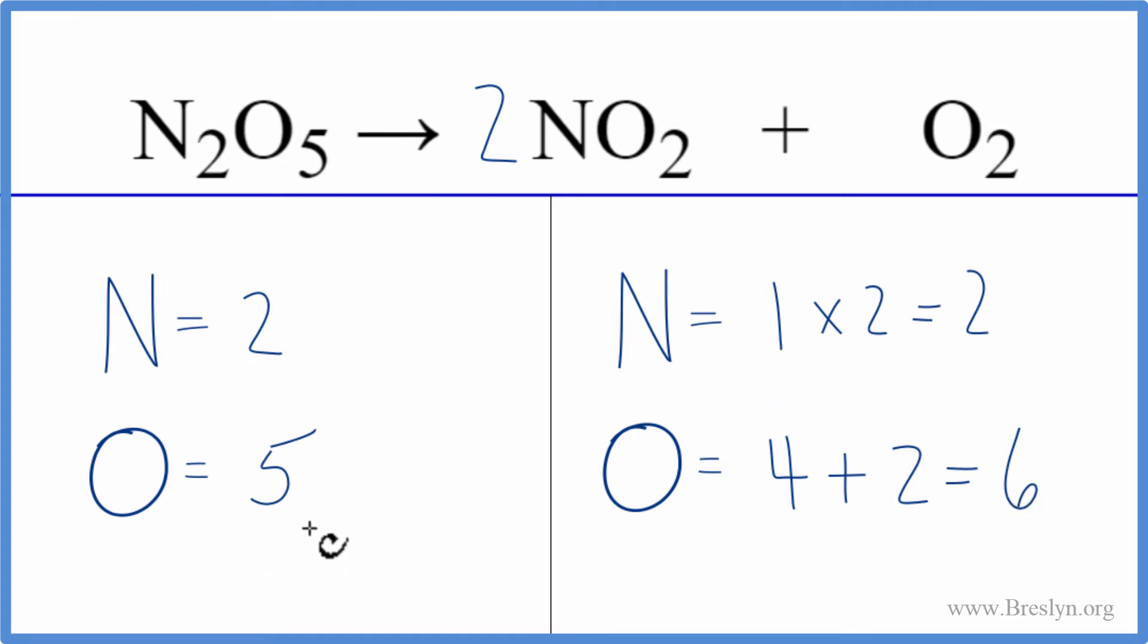When I have an odd number of oxygens, I like to get that to be an even number. So I'm going to multiply it by two. I'll put a coefficient of two here. Five times two, that'll give me ten oxygens. And then for the nitrogens, two times two, that'll give me four.